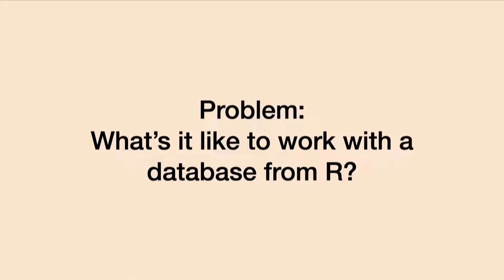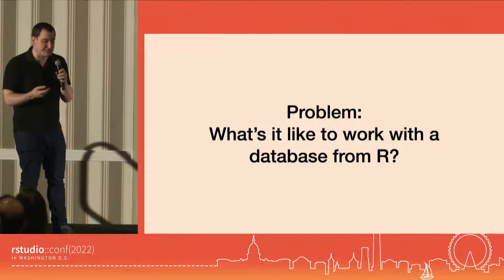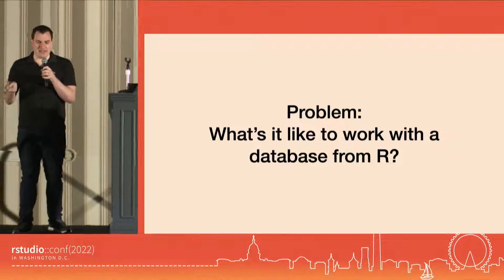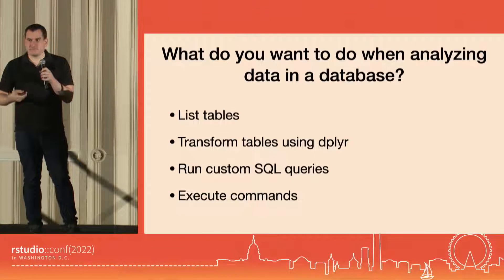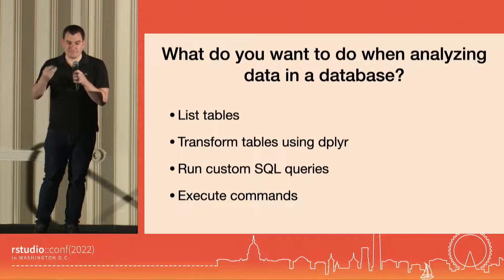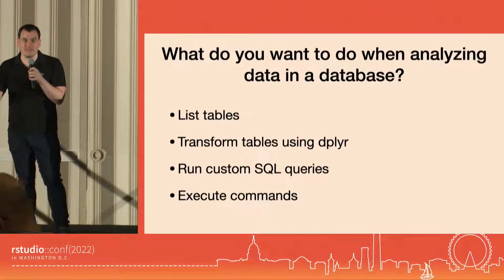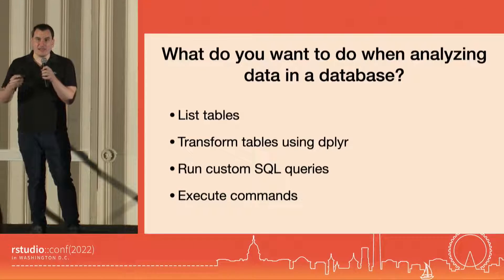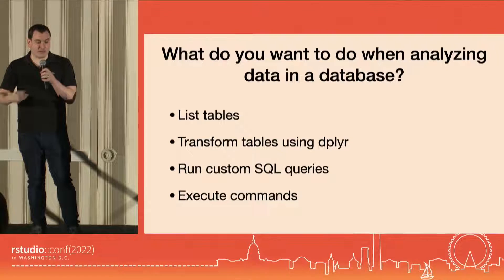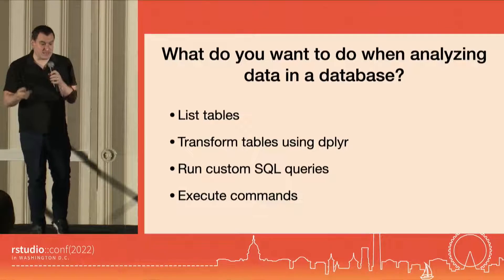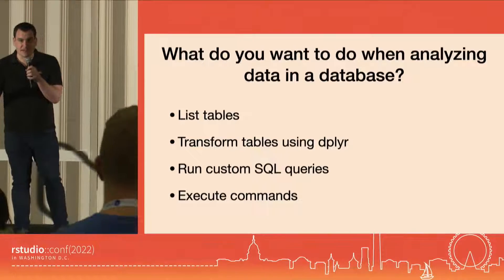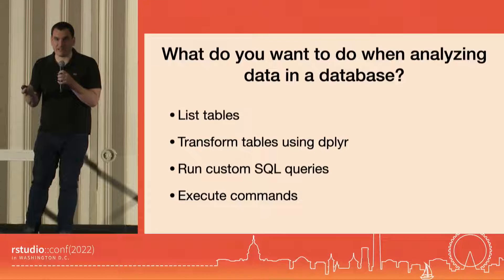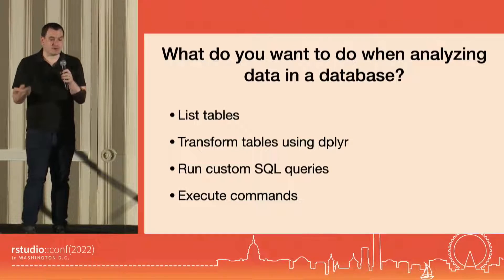Let's talk about the problem that it's solving. Mostly today I'm going to be talking from the perspective of the R package, but a lot of these same problems and solutions exist in the Python version. So what's it like to work with a database from R? Some common tasks: you might need to list the tables that are in the database. You might want to transform tables using dplyr — dbplyr is a really powerful package that lets you work with a remote table kind of as if it were an in-memory table. We sometimes can't just use dbplyr; we want to run our custom SQL queries. And sometimes we need to execute a command, like creating a table or dropping a table.